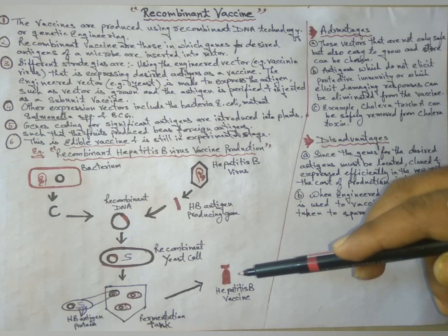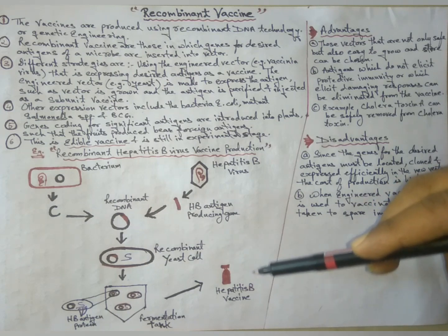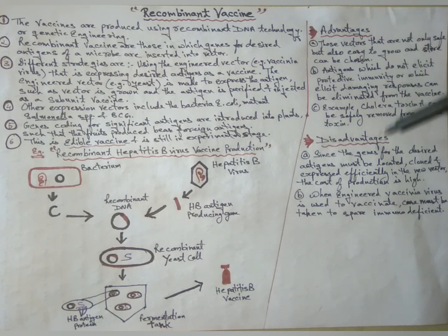The purified proteins are bottled up and ready for vaccination in humans. Then come to our advantages and disadvantages. Advantage: those vectors that are not only safe but also easy to grow and store can be chosen.